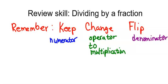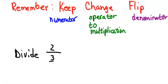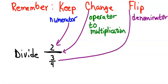All right, so let's give an example. Let's say we're going to divide — let's do this in black — divide 2 over 3 fourths. So 2 divided by 3 fourths. Like we said before, we're going to keep the numerator, change the division to multiplication, and then flip the fraction. So keep, change, flip. We keep the 2, change the division to multiplication, and flip the 3 over 4 to 4 over 3.